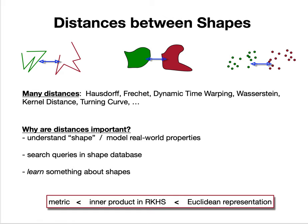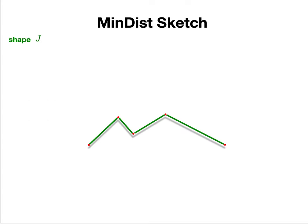So what is the MinDist sketch? We start with a shape - I'll use a piecewise linear curve as an example, the shape J. To define this, we need to define a set of landmarks Q. This is a set Q of points that live in the same domain as the shape, both in R^d.